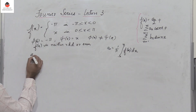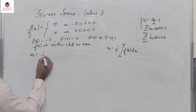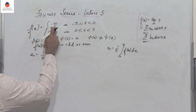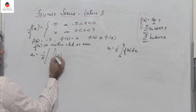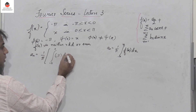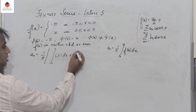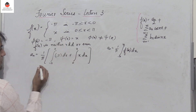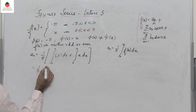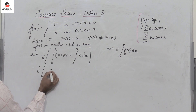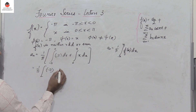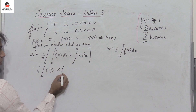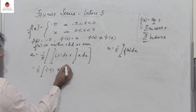We have a₀ equal to one by pi times the integral from minus pi to zero of f(x), which is minus pi, dx, plus the integral from zero to pi of f(x), which is x, dx. This gives one by pi times: minus pi times the integral of one, which is x, evaluated between minus pi and zero.